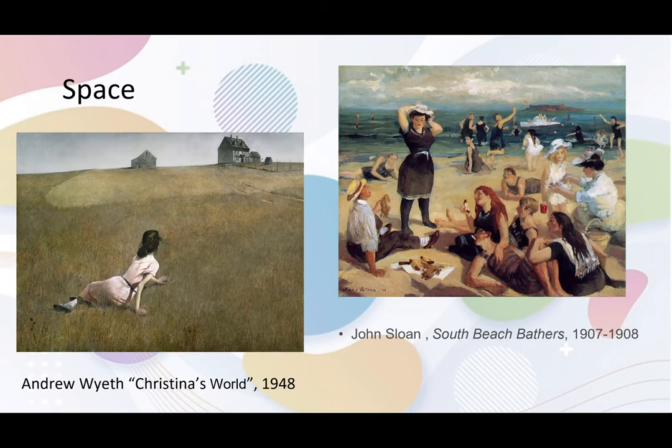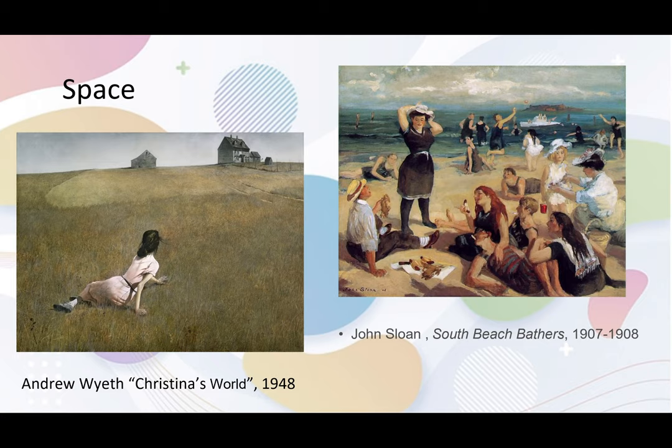The final element we will talk about today is space. Space is complicated, but to think of it simply is to think about where things are in the artwork. Everyone needs to use space in artwork, but it's hard to master. Younger students always use space when they think about decisions on where to put their main character, or when they are drawing the background using layers. But when advanced students and professional artists think of space, they can think of it in many different ways, such as through composition and perspective.